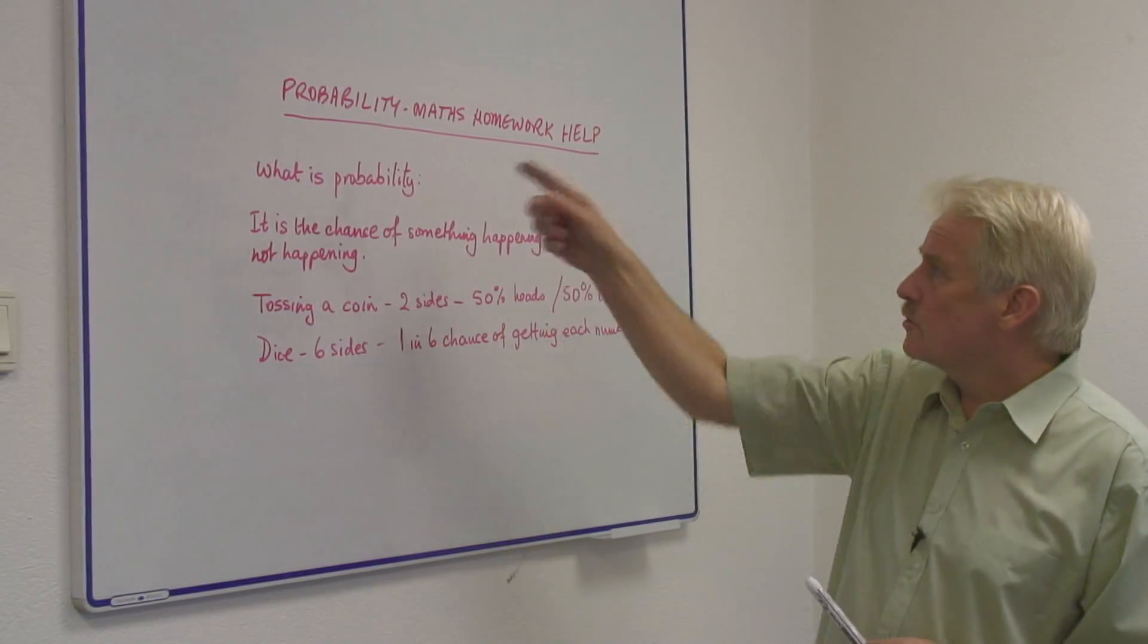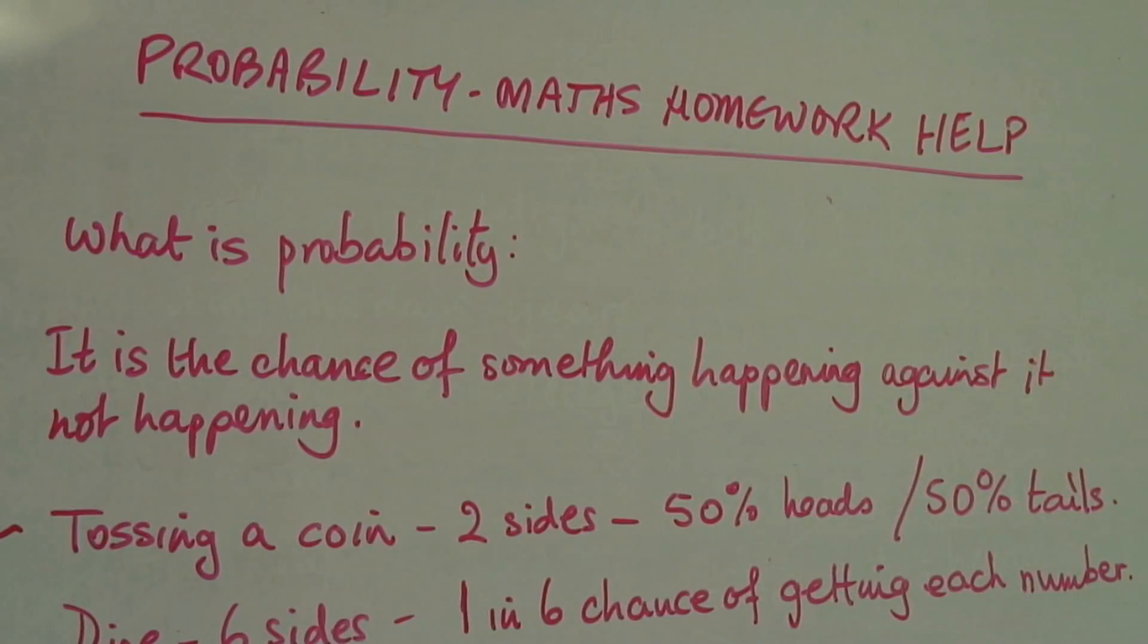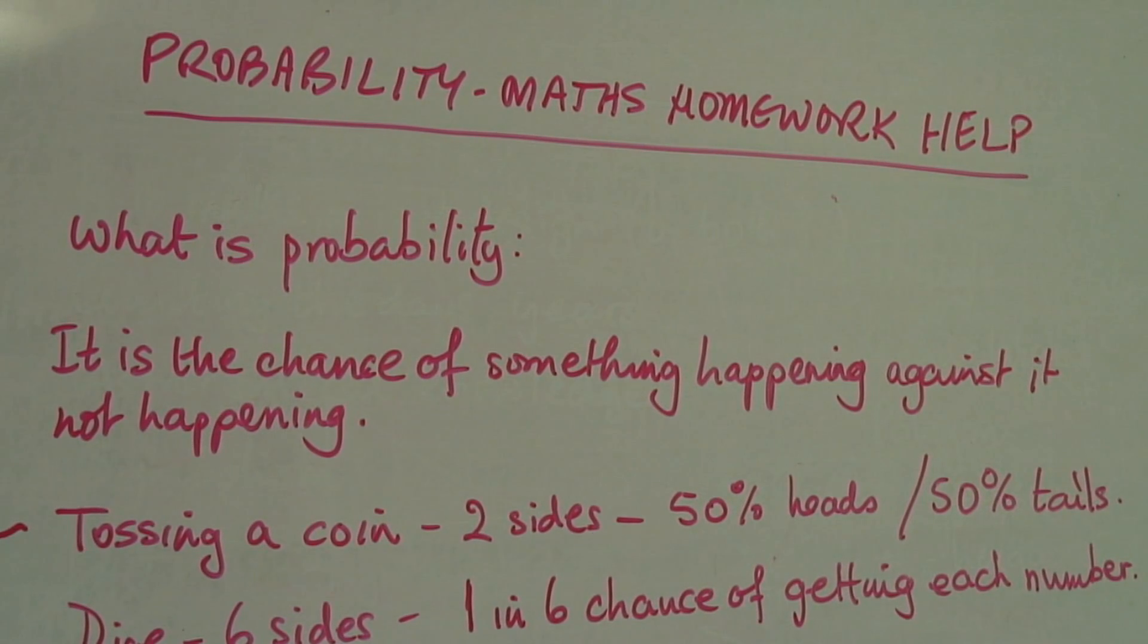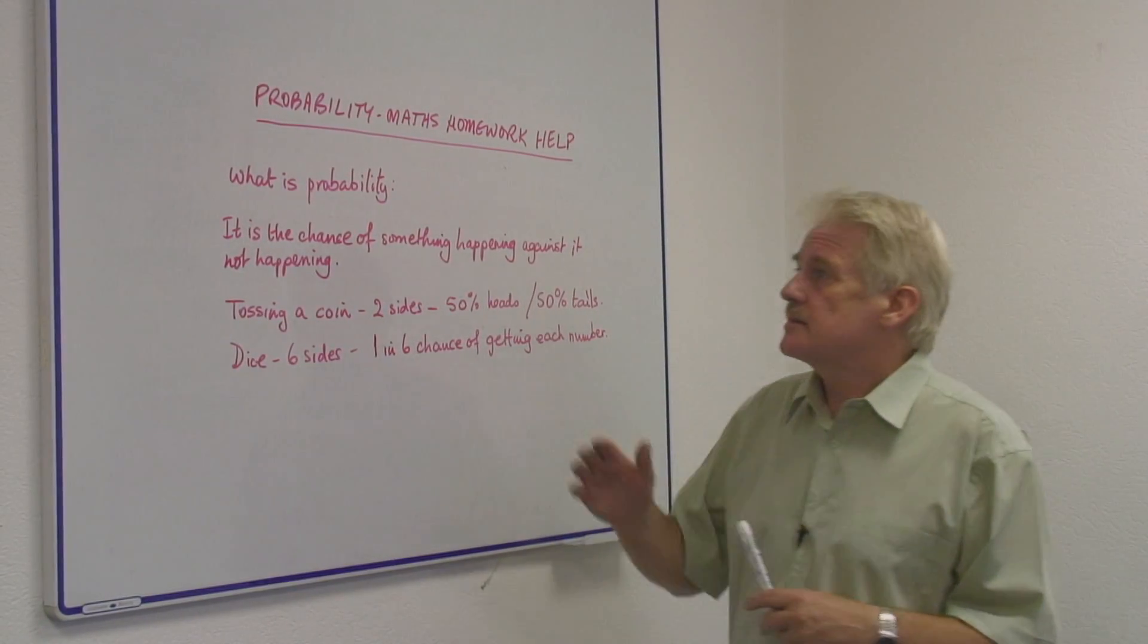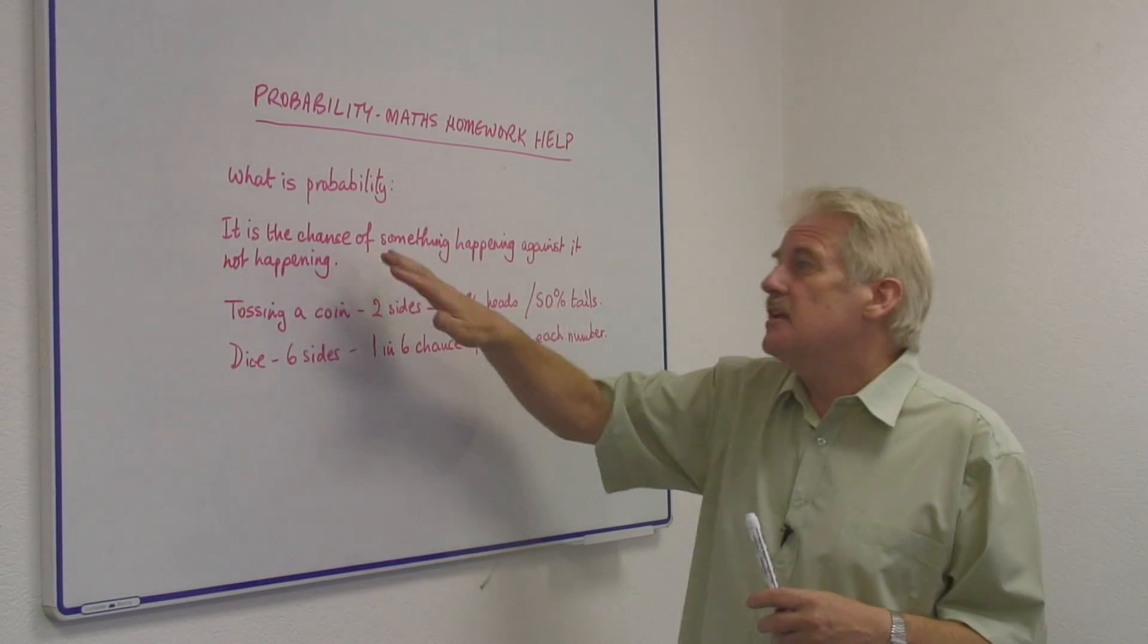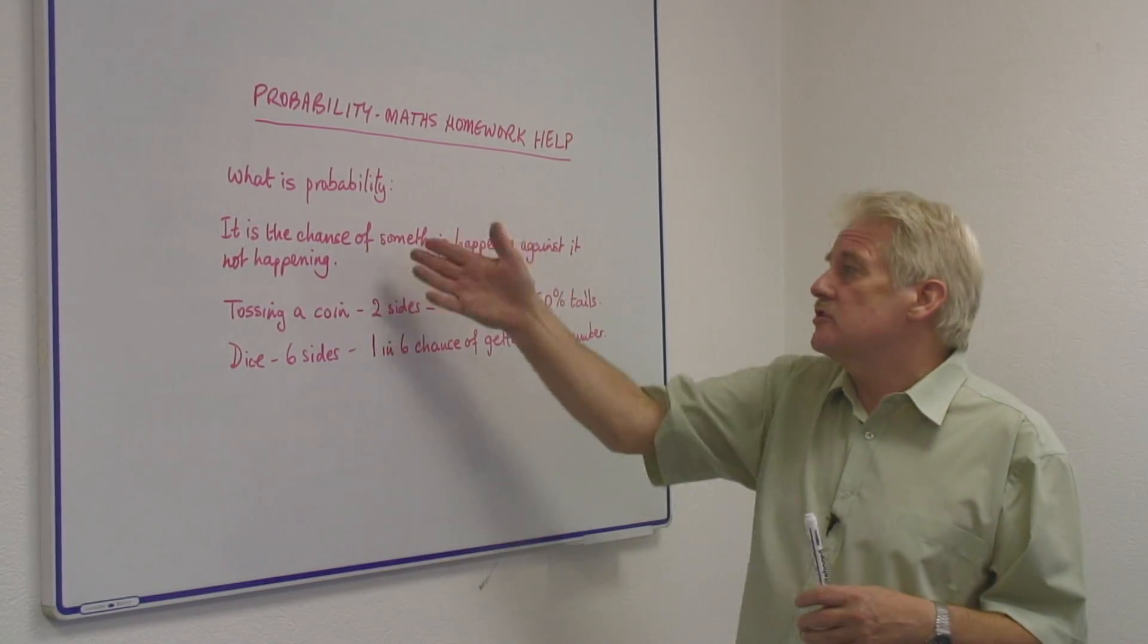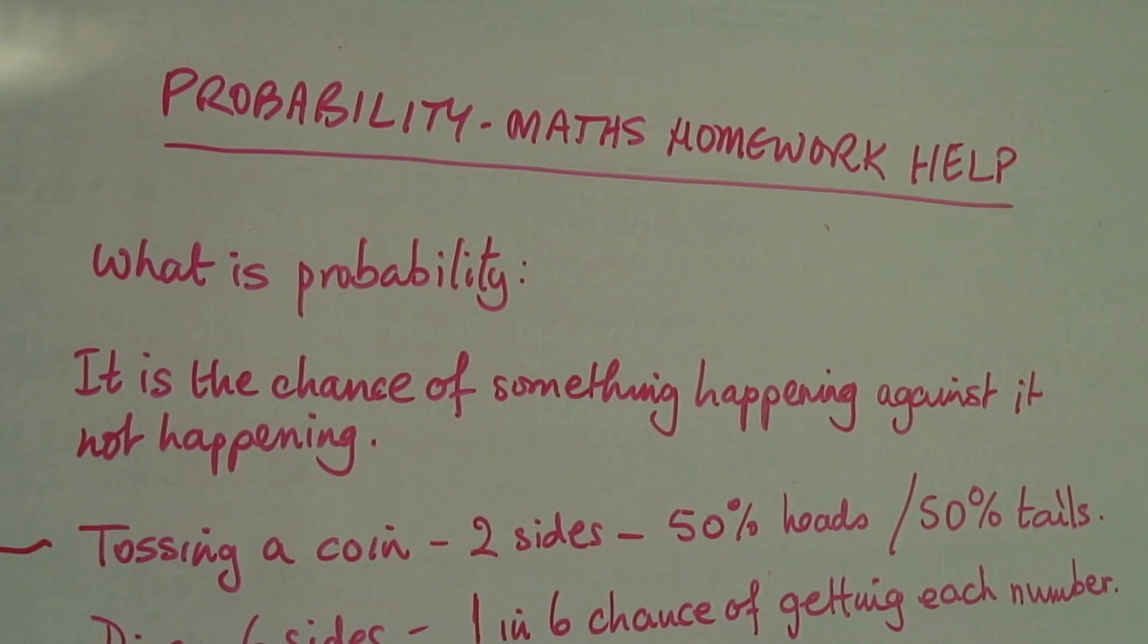Hi, I'm Steve Jones and I'm going to look at probability. This is basically what probability is. It's maybe easiest to think of it as the chance of something happening against the chance of it not happening.